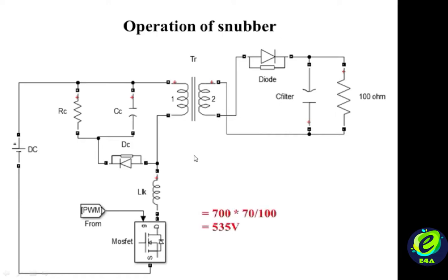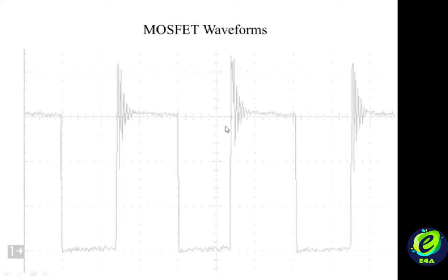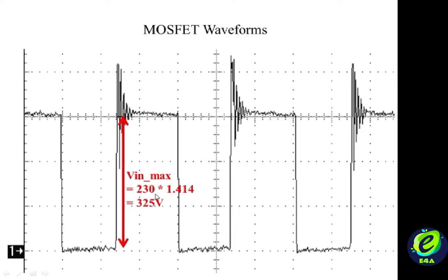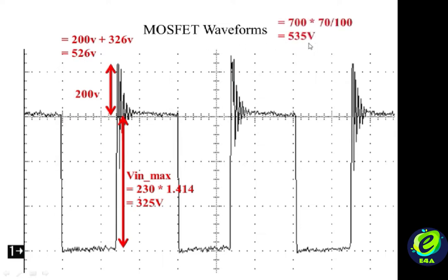Let us say we have a safety margin of 30% for the 700V maximum-rated MOSFET that is internal to the TinySwitch. Then the maximum tolerable voltage on the drain of the MOSFET will be about 535V. Now, let us say that the line voltage at a moment in time is the normal 230V, which amounts to 325V DC link voltage, and the voltage spike above the DC link voltage is 200V, which includes reflected voltage and voltage spikes due to leakage inductance. The total stress on the drain of the MOSFET will be 525V.